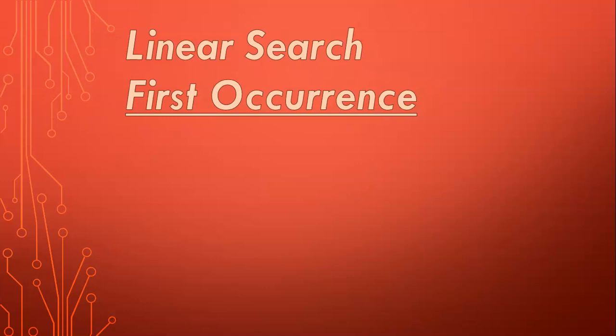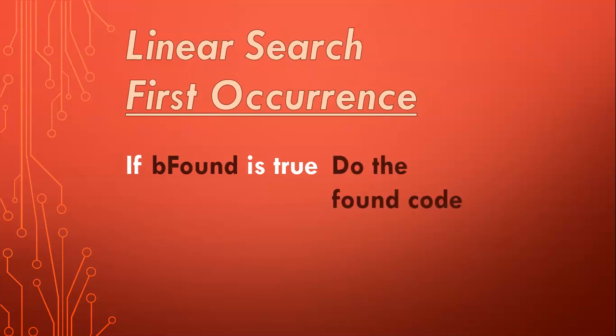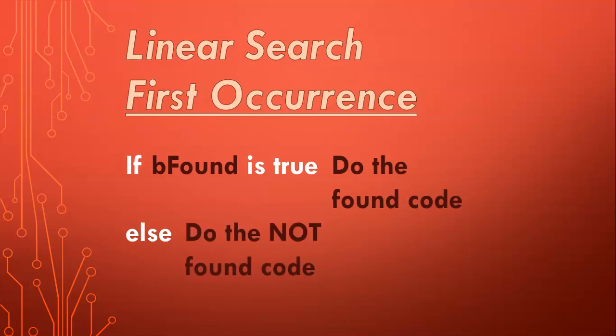Once we get to the end of our while loop, we're going to check that 'be found' variable. If it's true, that means at some point it changed from false to true — meaning it found what we're looking for — and then we do what we need to do in the event that we found the value. But if that 'be found' variable is false, then it went through the entire loop and never changed to true, which means that value wasn't in the array, and we do the not-found code.